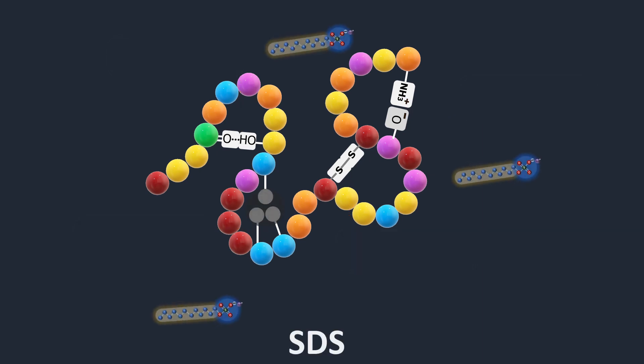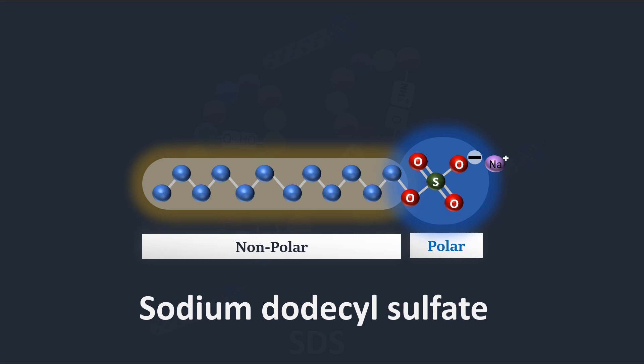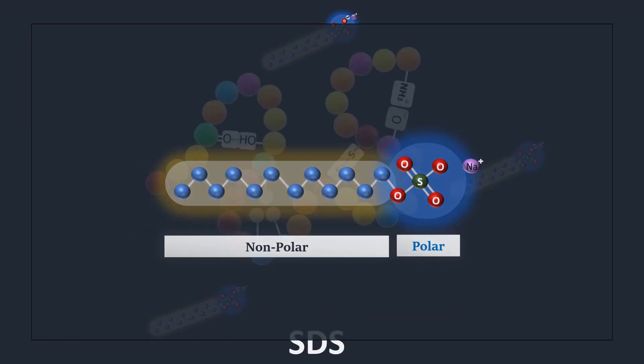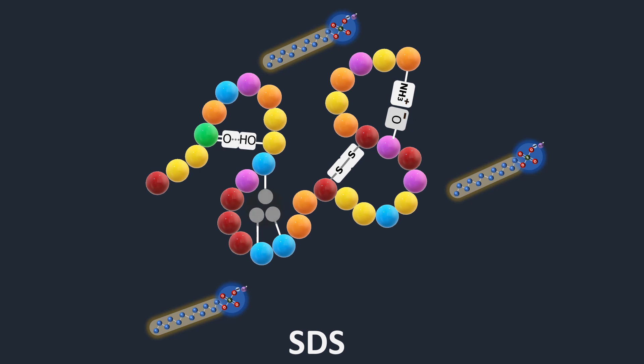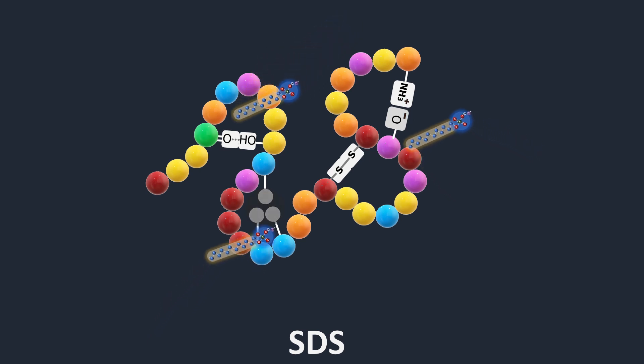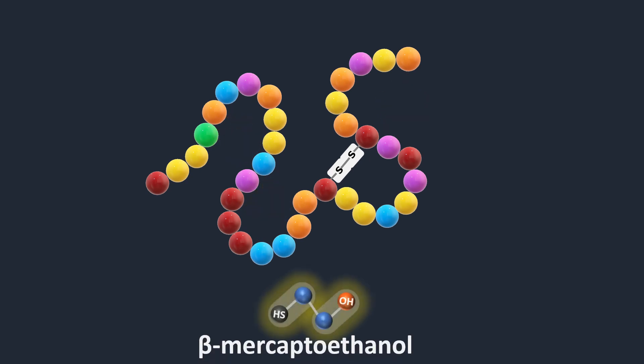SDS is an ionic surfactant and contains a polar head group with a net negative charge at the end of a long hydrophobic carbon chain. SDS denatures the native proteins by disturbing the hydrogen bonds, hydrophobic and ionic interactions. While the reducing agent beta-mercaptoethanol is used to cleave the disulfide bonds.